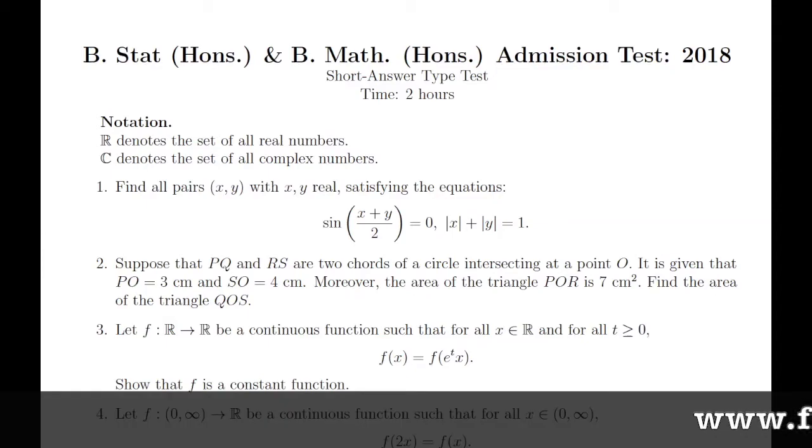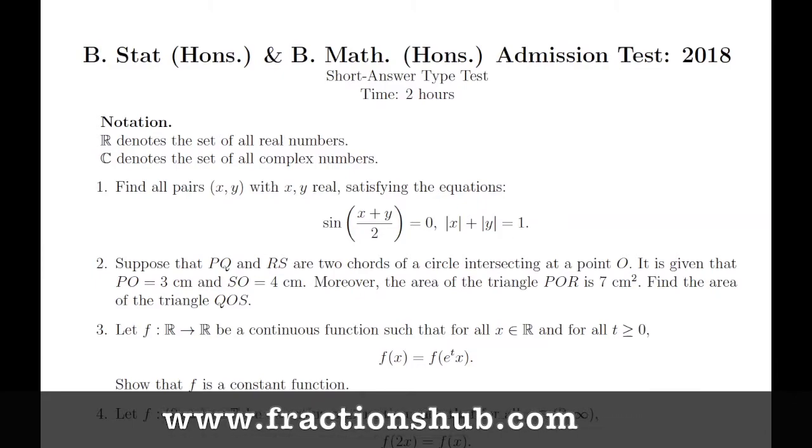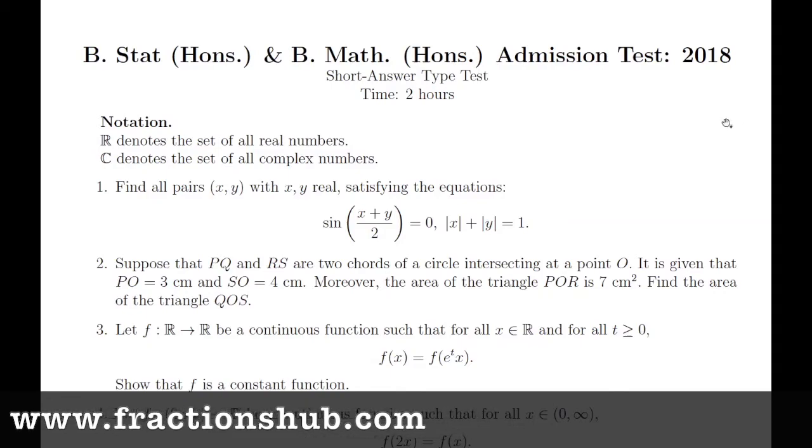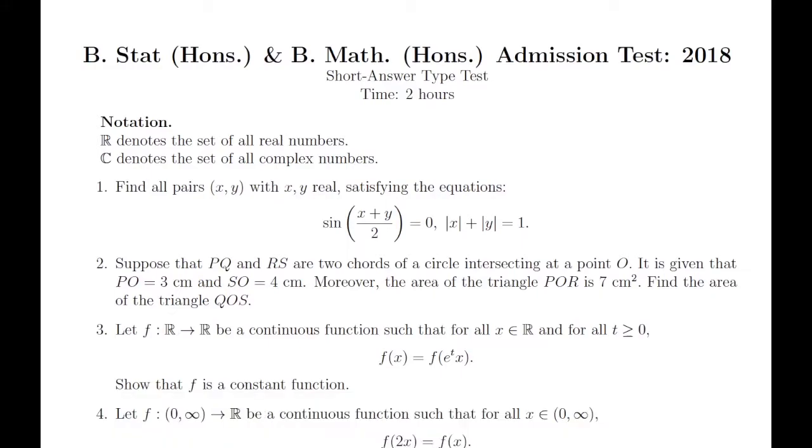Hello everyone, welcome to another series of the B.Stat and B.Math 2018 question solving. We'll be solving the second problem. It says that you have PQ and RS, which are two chords of a circle, and they are intersecting at point O. The lengths of PO and SO are given.